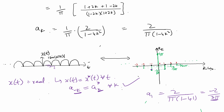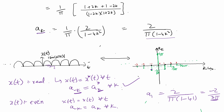Furthermore, x(t) = |sin(2πt)| is also an even signal, meaning x(−t) = x(t) for all time. The equivalent condition in the Fourier domain is that a₋ₖ = aₖ for all k. This is indeed true here because aₖ depends on k only through k², so whether we use +k or −k, we get the same value. This concludes the computation of the Fourier series coefficients.